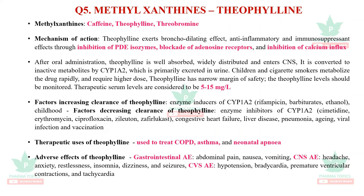Children and cigarette smokers metabolize theophylline rapidly and require higher doses. Theophylline has a narrow therapeutic index; therapeutic serum levels are 5 to 15 mg/L. Factors increasing clearance include enzyme inducers of CYP1A2 such as rifampicin, barbiturates, ethanol, and childhood. Factors decreasing clearance include enzyme inhibitors of CYP1A2 such as cimetidine, erythromycin, ciprofloxacin, and zileuton. In pathological conditions like congestive heart failure, liver disease, pneumonia, viral infection, and vaccination, the theophylline dose should be adjusted.